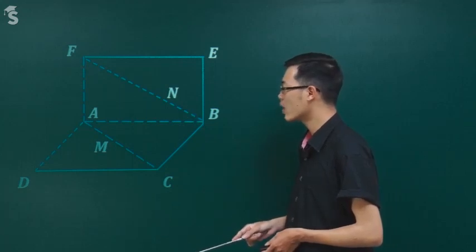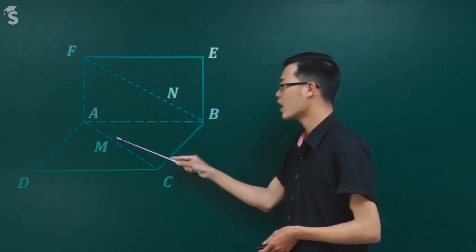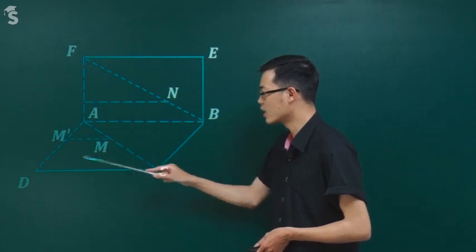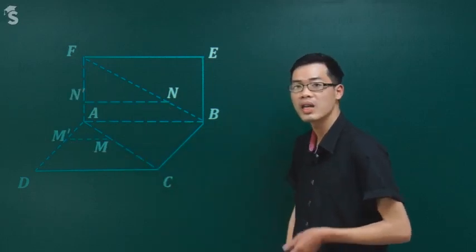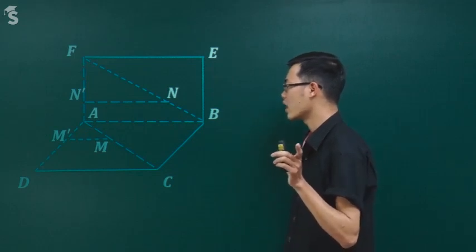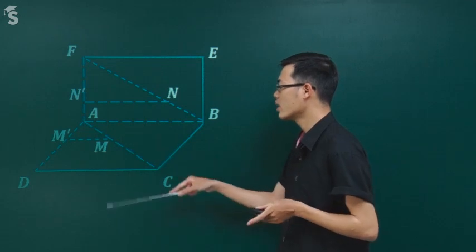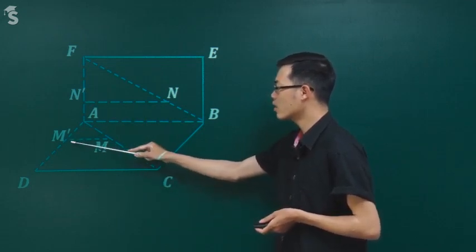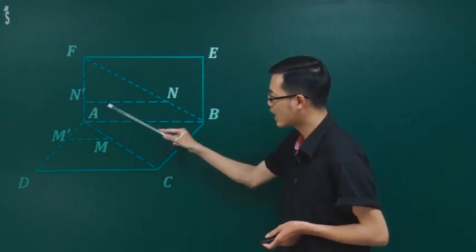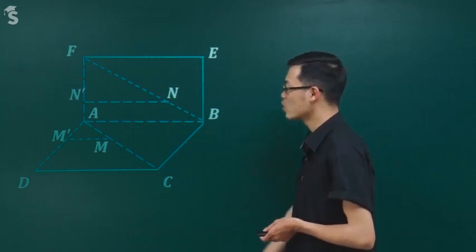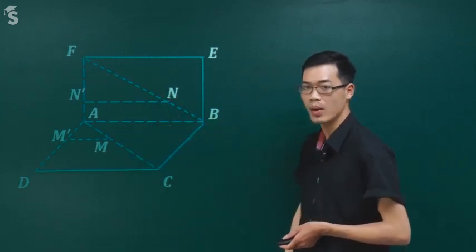Các em nối thêm một số nét vào hình. Qua M và N lần lượt người ta vẽ hai đường thẳng song song với AB. Qua M người ta vẽ đường thẳng MM', qua N người ta vẽ đường thẳng NN'. Song song AB và cắt AD, AF lần lượt tại M' và N'. Như vậy ba đường AB, MM', NN' là song song với nhau.